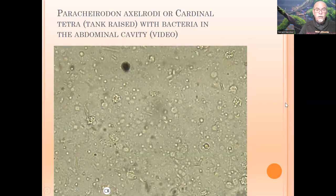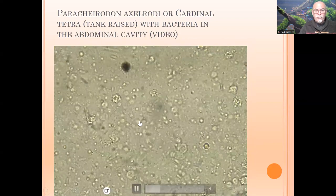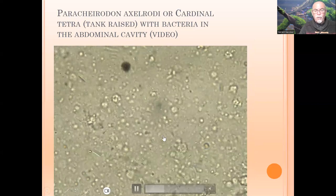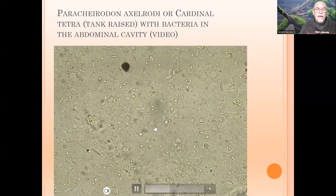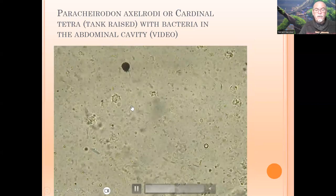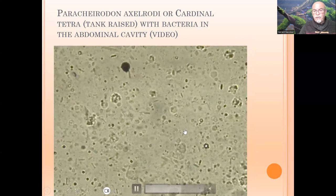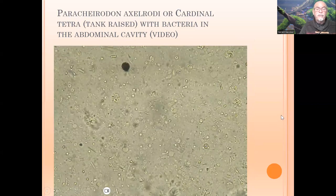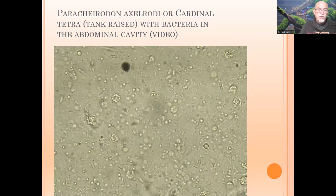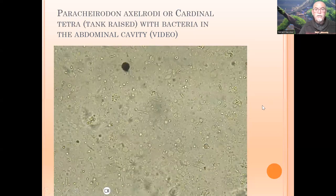And internally, in the abdomen, we found all different kinds of bacteria — with rods, with spots, black spots, white spots — many different kinds of bacteria, which is causing an infection in the organs, not only in the gills, but also internally.